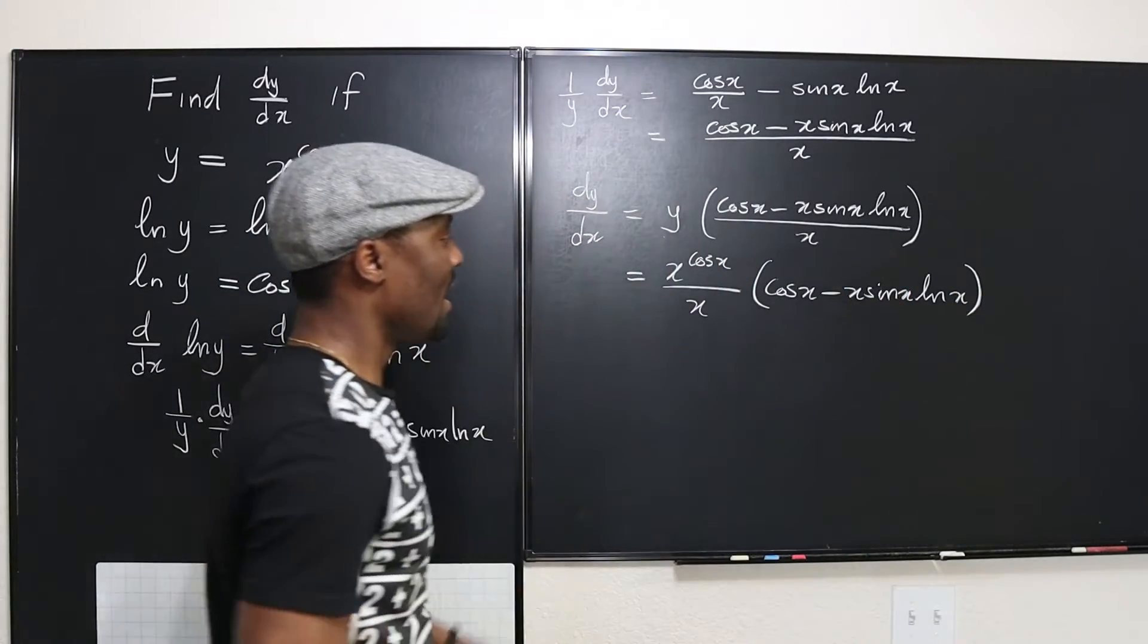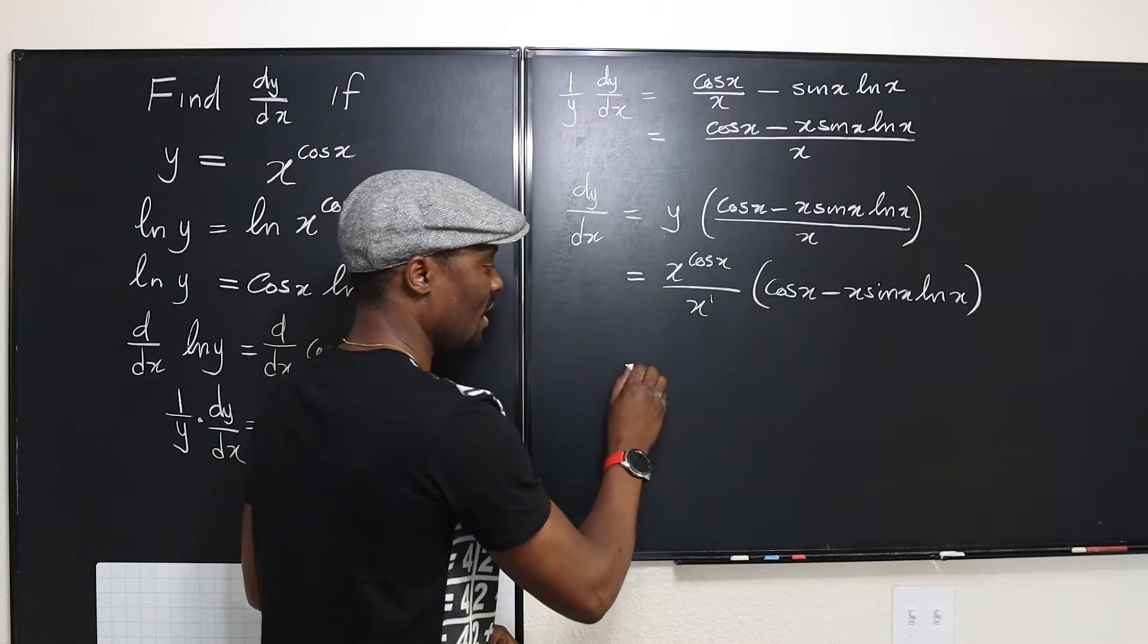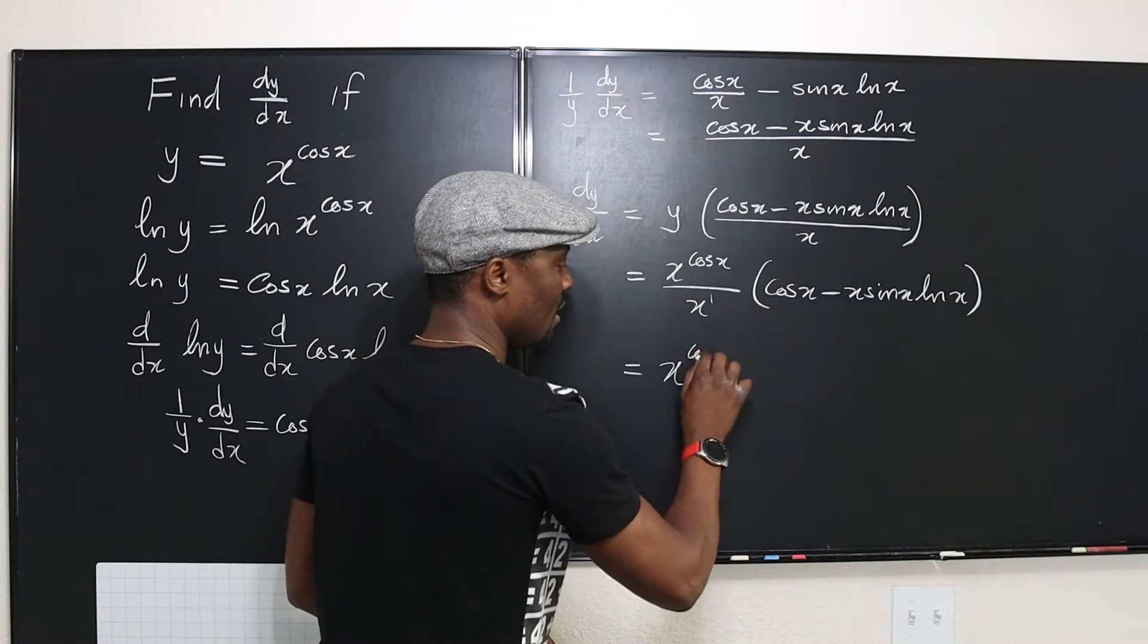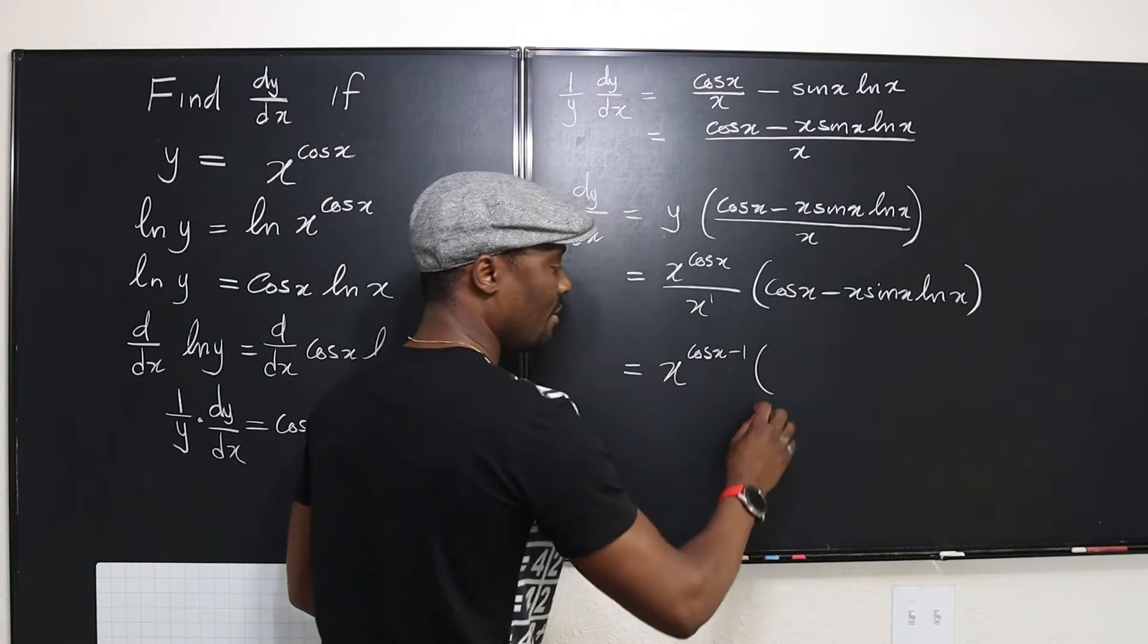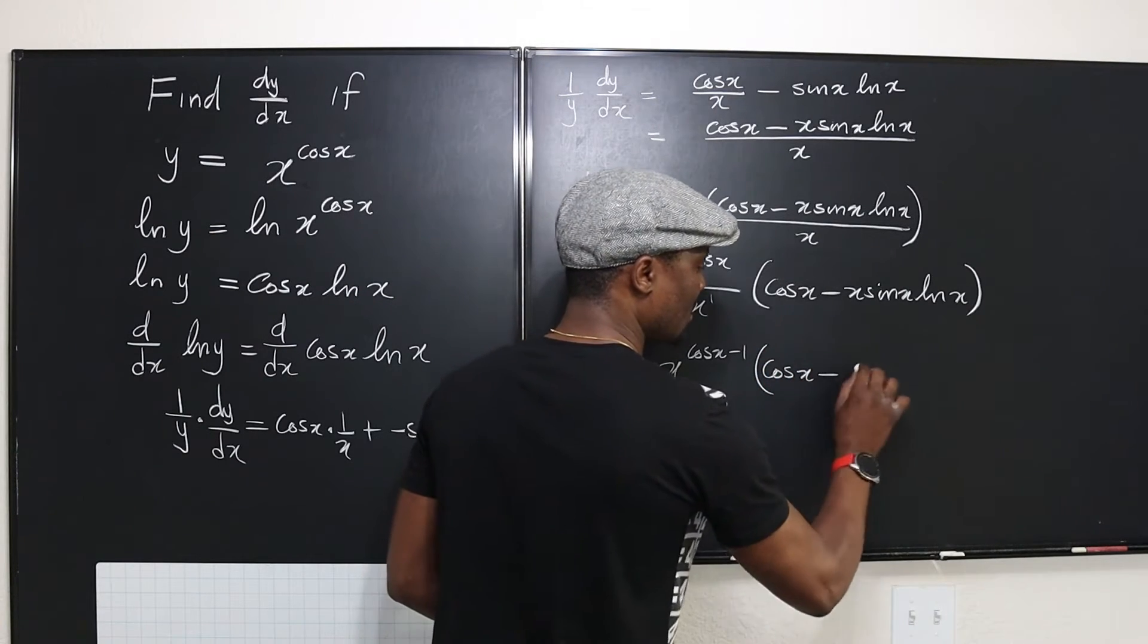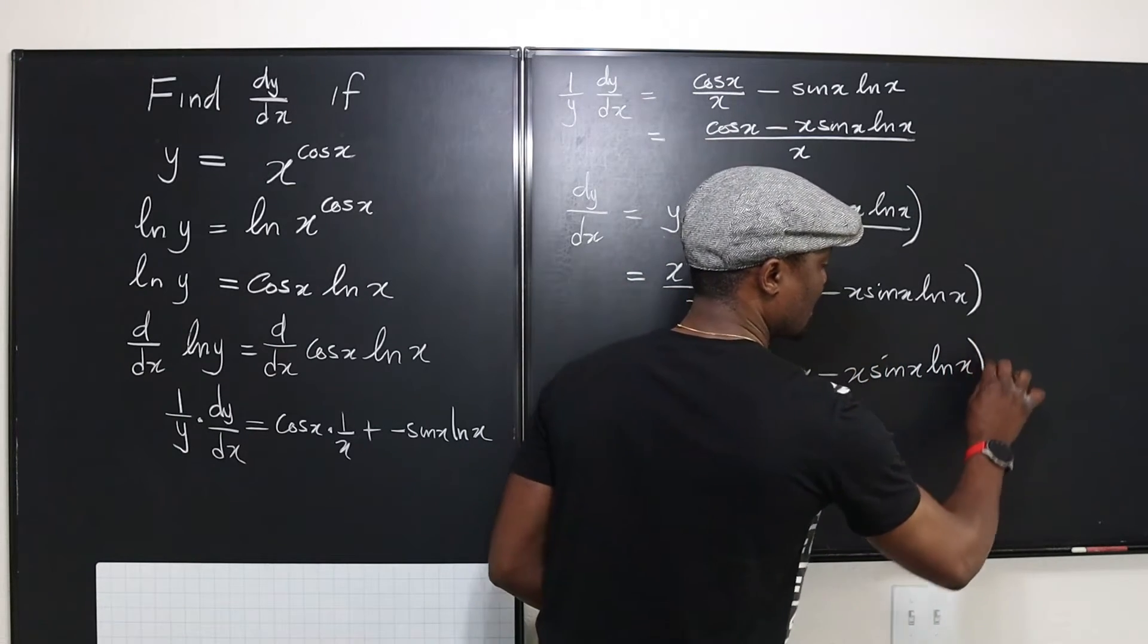So how do we take care of this? Well, apply the laws of exponents. See, this is x to the first. You can rewrite this to be x to the cosine x minus 1 multiplied by cosine x minus x sine x ln x.